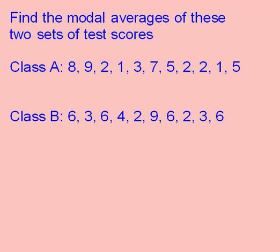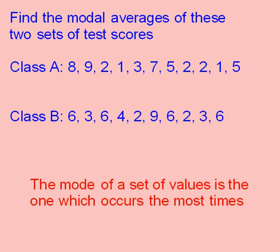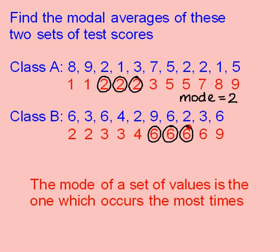Sometimes when we want to find a typical value for a set of data, we don't use the median. Instead, we use the modal average, also sometimes called the mode. This is the value that is the most common. I want to find the mode for class A and the mode for class B. I start by putting both sets of data in order. Now that the data is in order, it's really easy to see that in class A the number 2 occurs the most times, so the mode is 2. In class B, we can see that 6 occurs the most times, so the mode is 6.